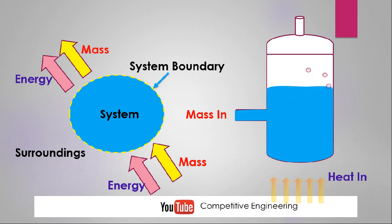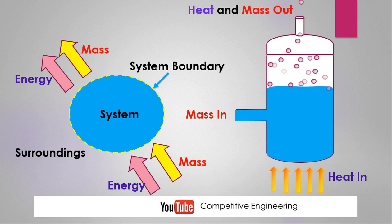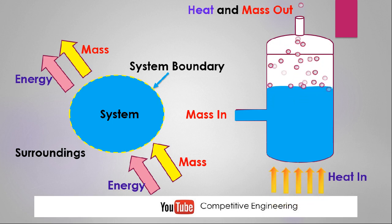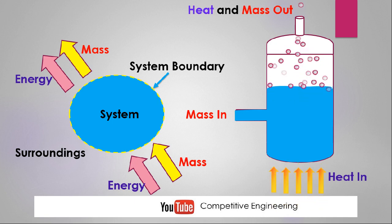When we supply heat energy to water it will start boiling, forming water vapors and bubbles. The bubbles collect in the top area, and when sufficient pressure is reached the vapor moves out through the nozzle. The water vapor — which is mass — exits the system, and since it is at high temperature it carries high thermal energy. So heat and mass are going out of the system, making this boiler an example of an open system.